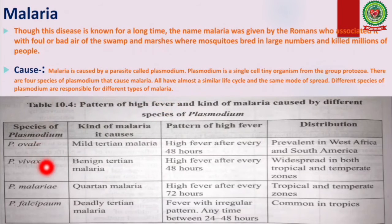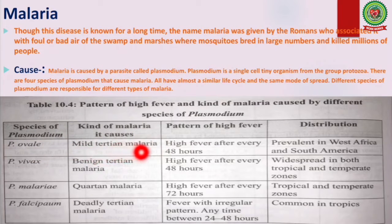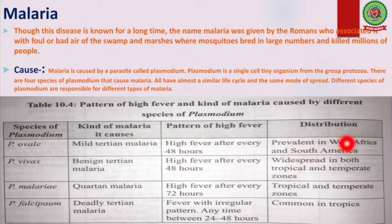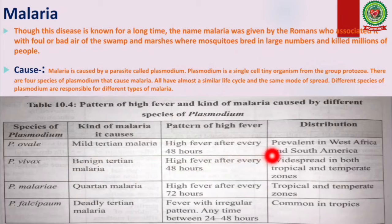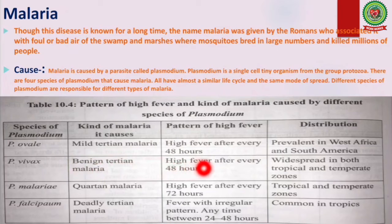Different species of Plasmodium are responsible for different types of malaria. In this table, the first species is Plasmodium ovale — it causes mild tertian malaria, resulting in high fever after every 48 hours, and is prevalent in West Africa and South America. Next is Plasmodium vivax — it causes benign tertian malaria, resulting in high fever after every 48 hours, and is found in both tropical and temperate zones. Third is Plasmodium malariae — it causes quartan malaria with high fever after every 72 hours, most prevalent in tropical and temperate zones.